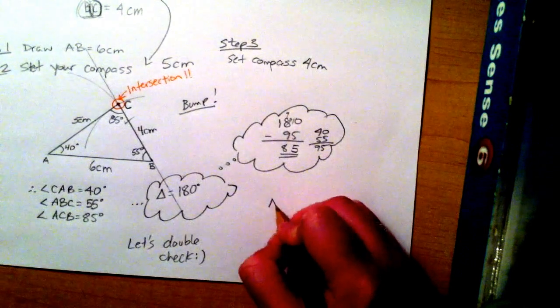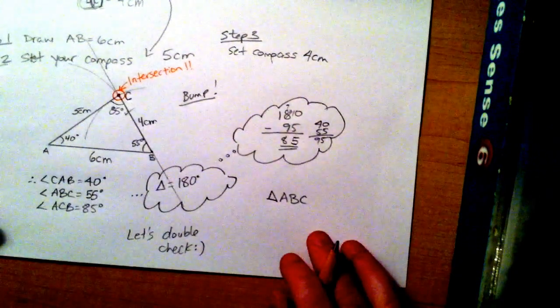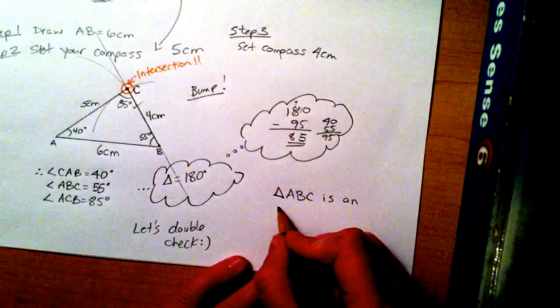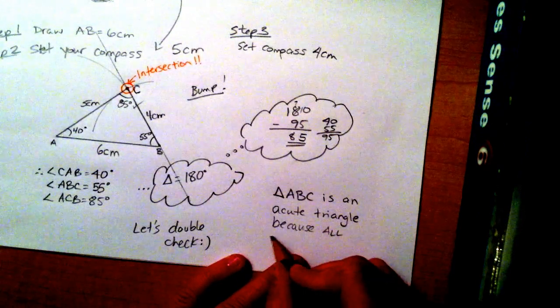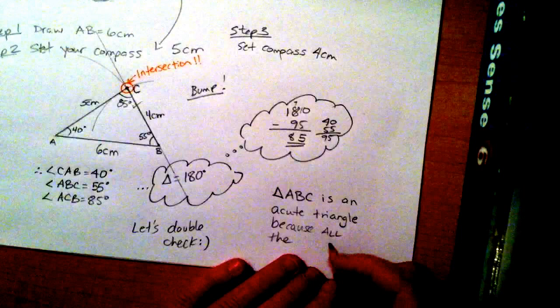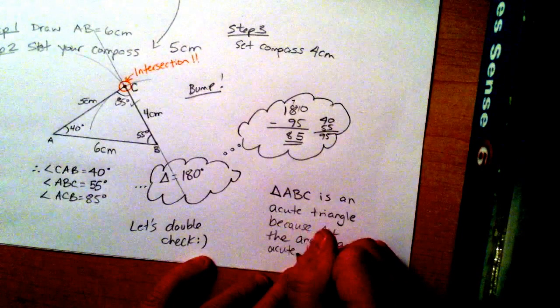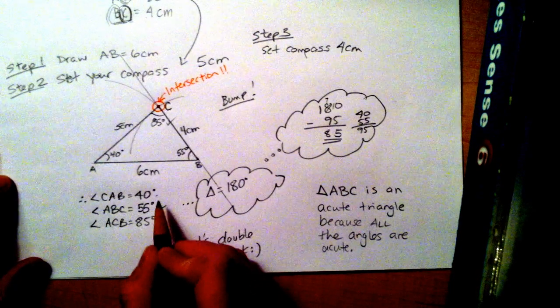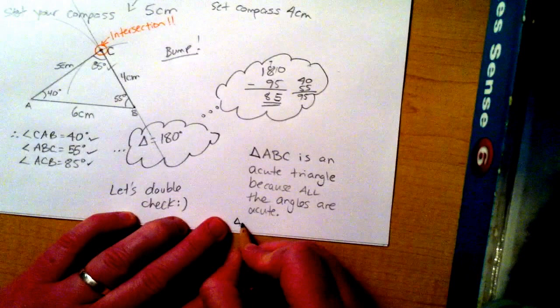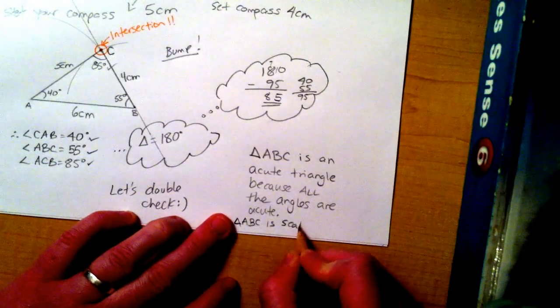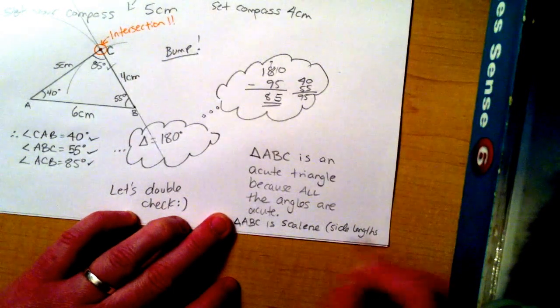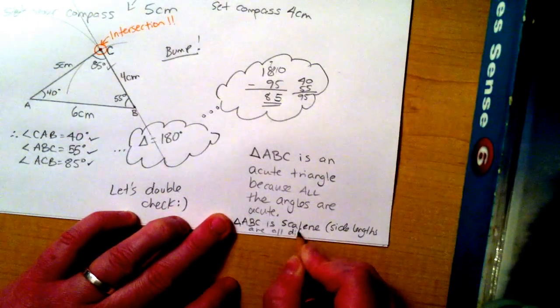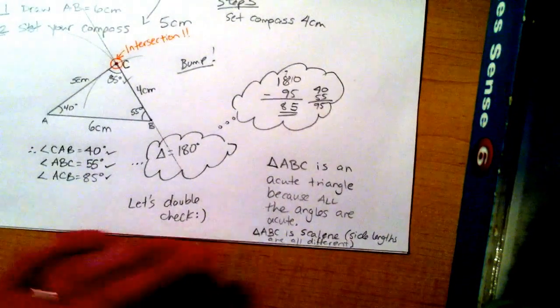Now let's add some details about our triangle. Triangle ABC, well it's an acute triangle. Why? Because all the angles are acute. 40 degrees, 55 degrees, and 85 degrees. Those are all acute because they are less than 90 degrees. We can also say that triangle ABC is a scalene triangle, because all the side lengths are different.